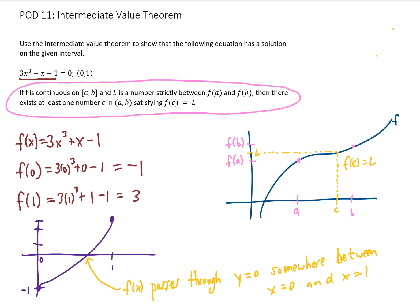To word this a little bit more simply, because our function goes from having a negative y value at x = 0 to having a positive y value at x = 1, the intermediate value theorem says our function must pass through 0 somewhere in between x = 0 and x = 1.